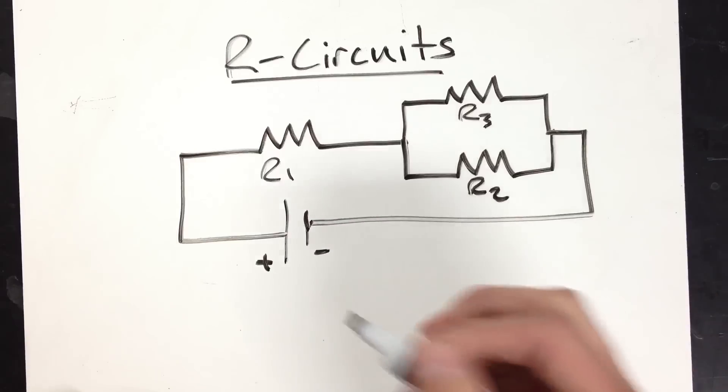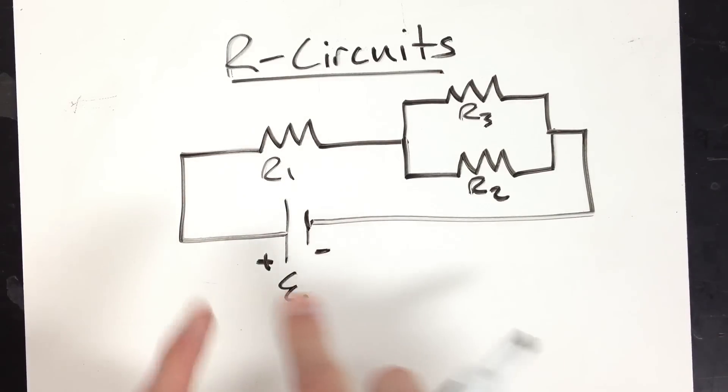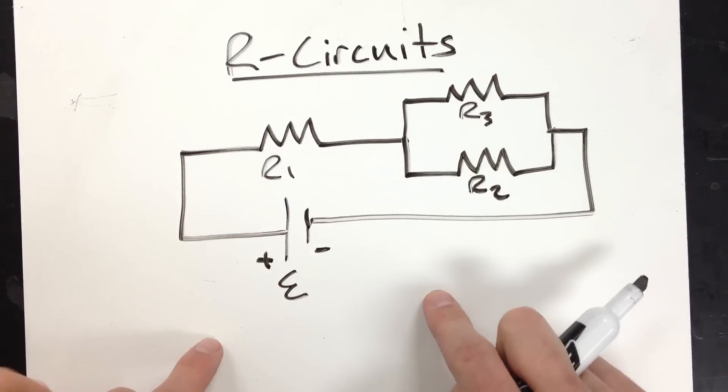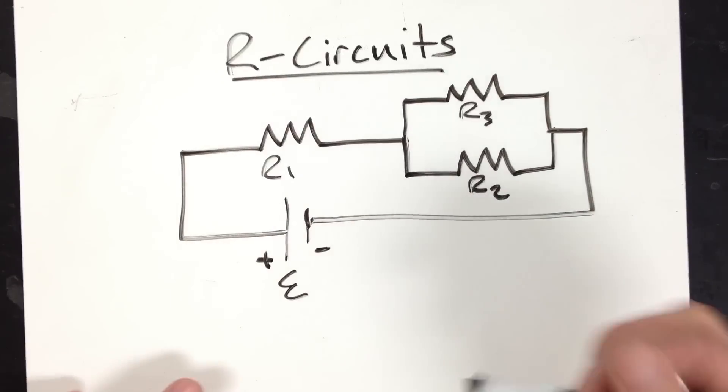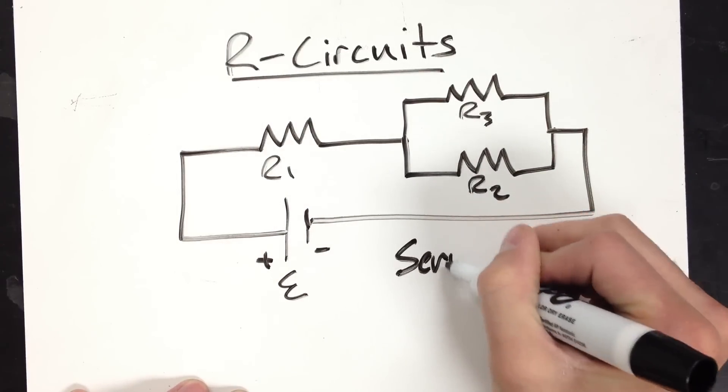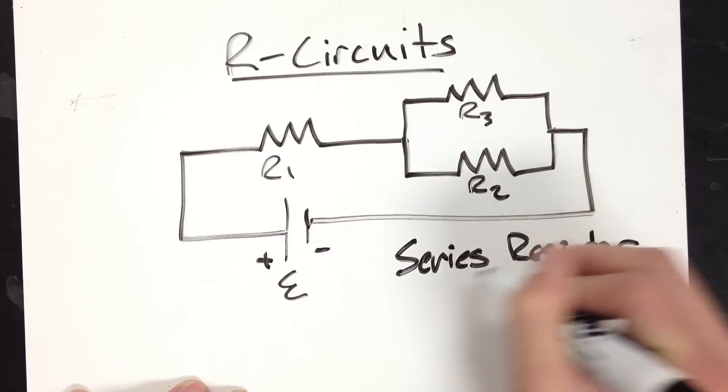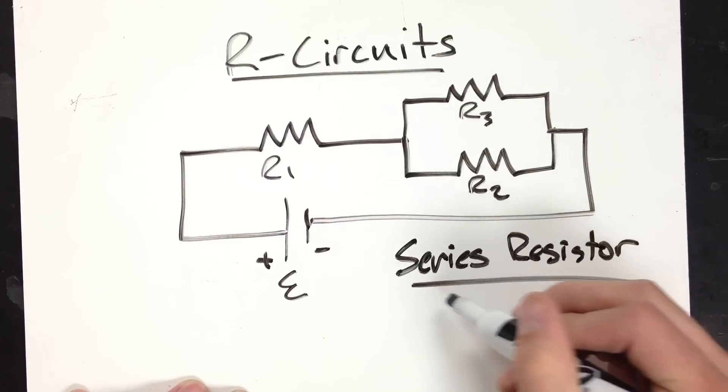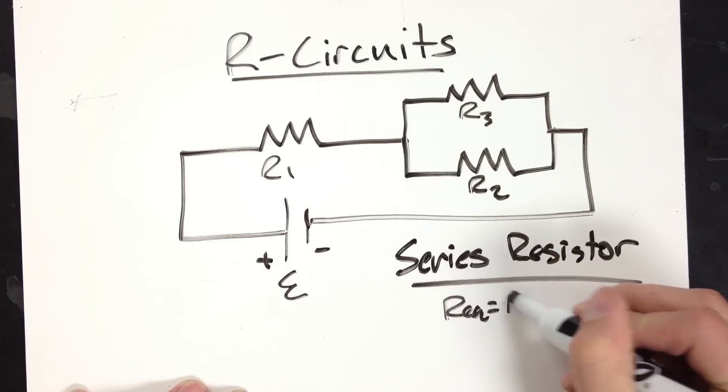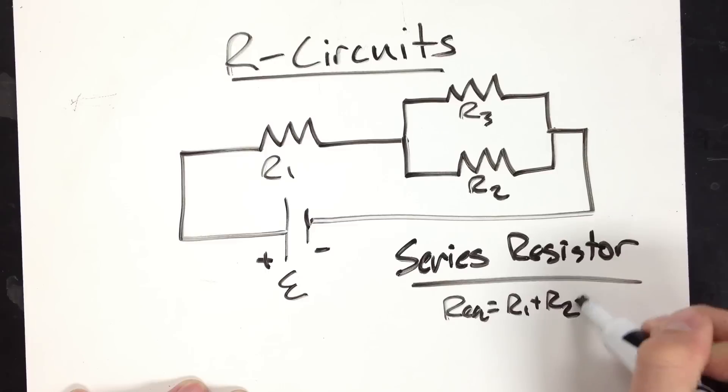And what will be helpful to us is to determine the equivalent resistance of this circuit. Now, we learned that series resistors, to find their equivalent resistance, it is just a straight up sum: R1 plus R2 plus R3.